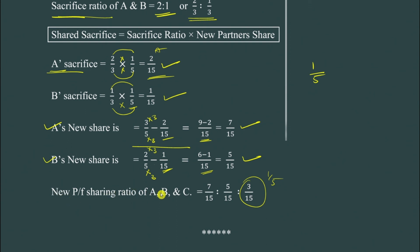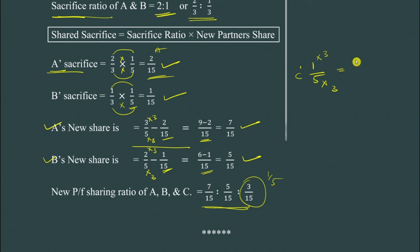So the new profit sharing ratio of A, B, and C: A = 7/15, B = 5/15, C = 3/15. With denominator 15 common, the new profit sharing ratio is 7 to 5 to 3. Simple.